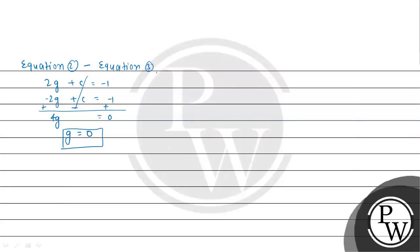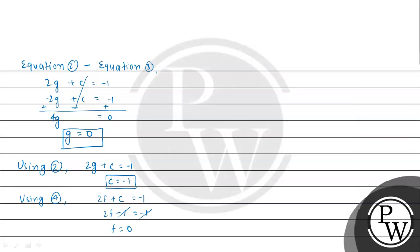Now substituting g = 0 into equation 2: 2(0) + c = -1, so c = -1. Then using equation 4: 2f + c = -1. Substituting c = -1: 2f - 1 = -1, so 2f = 0, therefore f = 0.